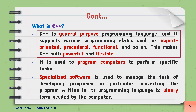Here, general purpose programming language means that by using C++ you can develop games, desktop applications, operating systems, browsers, and other types of applications. That is the reason why we say it is a general purpose programming language. It also supports various programming paradigms such as object-oriented, procedural, and functional. Generally, a programming paradigm is about different approaches or methods used to find a software solution to a problem, using tools and techniques that are available following some approaches.